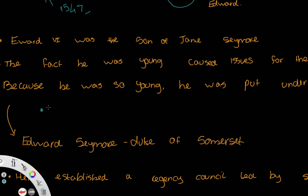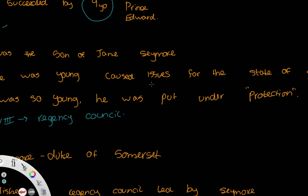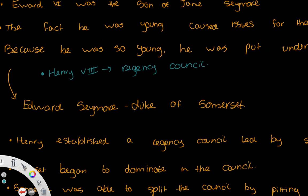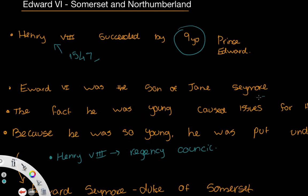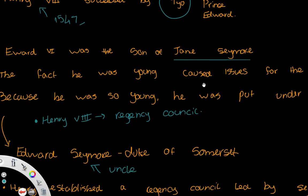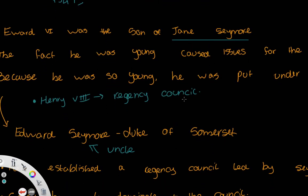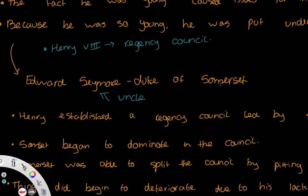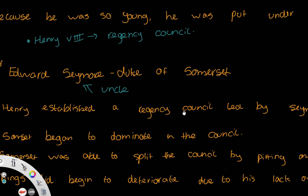For this reason, Henry VIII before his death established a regency council. He set up a council that would rule England on Edward's behalf, and Edward was put under protection with the Duke of Somerset, Edward Seymour. Edward Seymour was his uncle because Henry VIII had married Jane Seymour, Henry's third wife, and her brother Edward Seymour became the protector and was told he was to run this council.